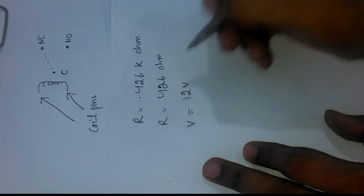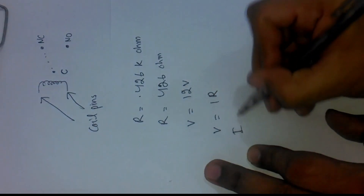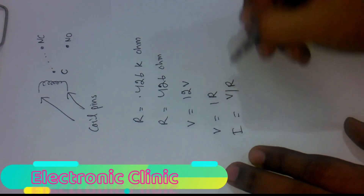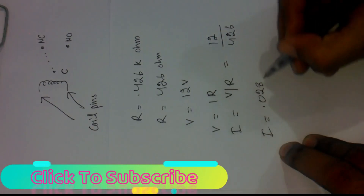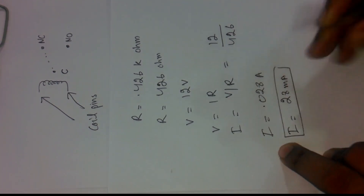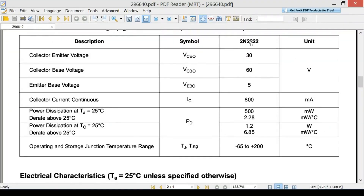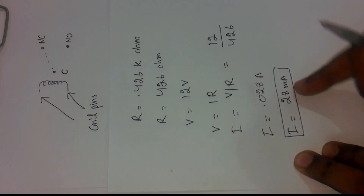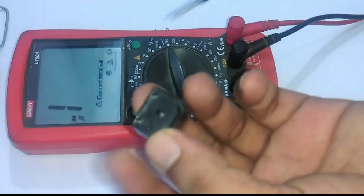The voltage is 12 volts. Using Ohm's law, I = V/R = 12 / 426 = 0.028 amps, which equals 28 milliamps. We can use any NPN or PNP transistor whose collector current is greater than 28 milliamps. I'll use the 2N2222 NPN transistor, whose collector current is much greater than the relay coil current. 2N2222 transistors are cheap and easily found in any electronics shop.